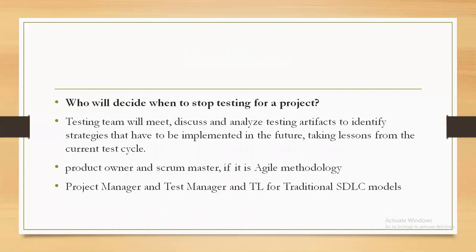Who will decide when to stop testing for a project? Generally once execution is completed and defects reported by developers are resolved, the testing team will meet, discuss, and analyze testing artifacts. Testing artifacts include project-related documents, testing-related documents, defect templates, test cases, review reports, and requirements traceability matrix, to identify strategies to be implemented in the future.